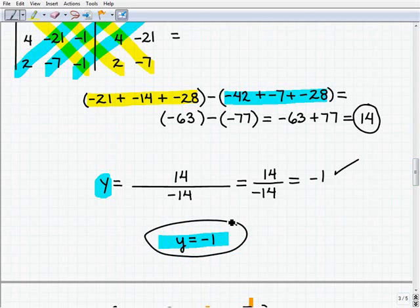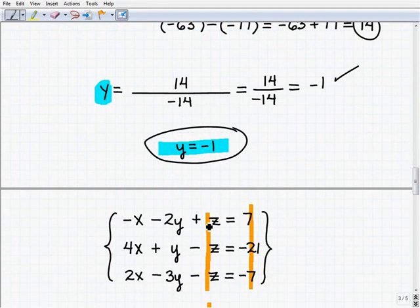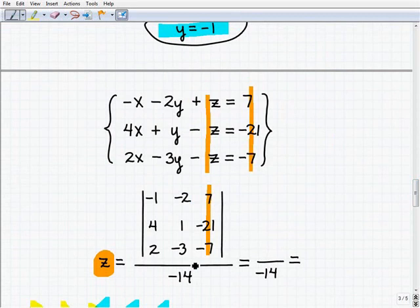So all we need to do is solve for z, and we're going to do it the exact same way. Now why don't you take a moment before I actually show you how to set it up. Let's see if you can do it yourself. So go ahead and write that out for z. So here it is. You're going to replace the z coefficients with 7, negative 21, and negative 7. So it looks like that. That's what you should have set up. And if you did, good job. Now what you need to do is go ahead and follow through and calculate that determinant. You may want to pause the video, see if you get it right.